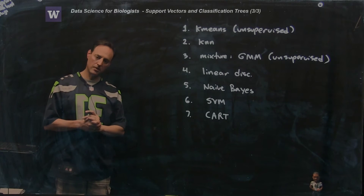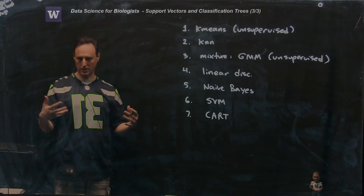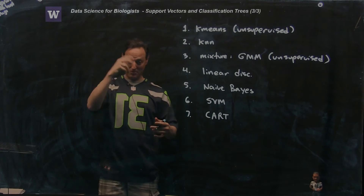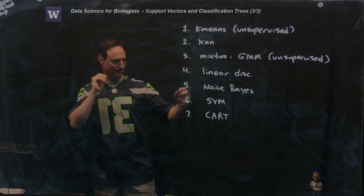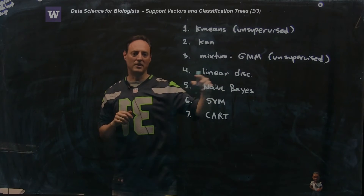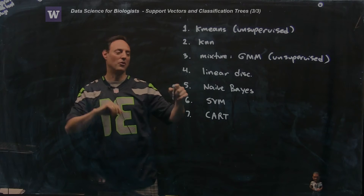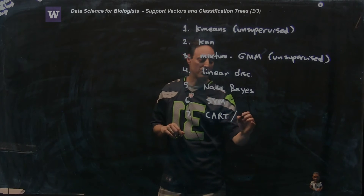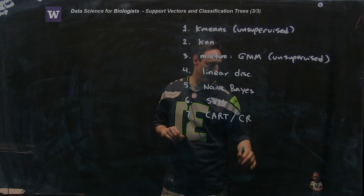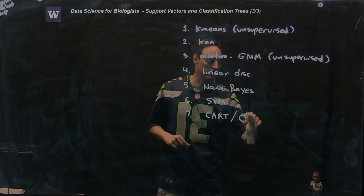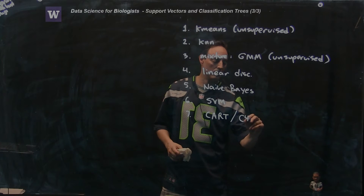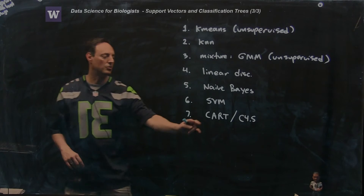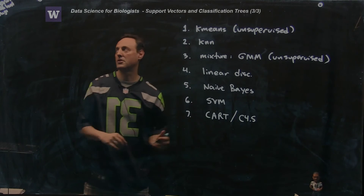I'll mention three others that are important to think about, because they have recently been identified as among the other top ten algorithms out there. Linear discriminant is not actually one of the top ten algorithms — I put it up here because we covered it. But instead of CART, there's also a method called C4.5, which is a really weird name for an algorithm. It's a version of a decision tree, so these are really two separate algorithms that make up the top ten.